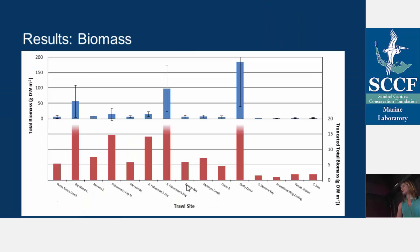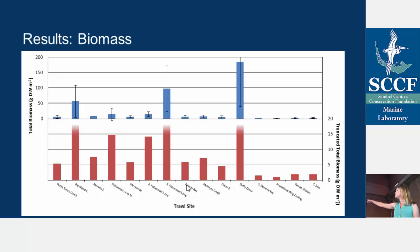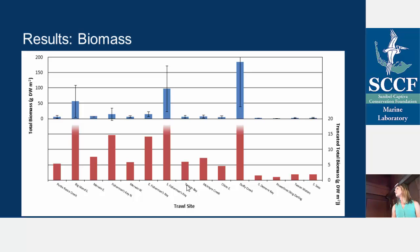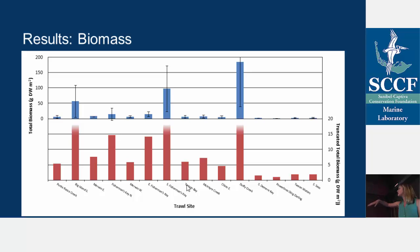Moving into the results. This graph is divided in two: along the x-axis are all of our sites, with those closest to the river mouth on the left and the furthest away on the right. So Tween Waters and South Seas are up in Pine Island Sound, while Punterasa Creek, Big Island, and Merwin are near the river mouth. What we expected to see was high biomass near the river trailing off toward Pine Island Sound. You can see that Pine Island Sound has lower biomass, but the pattern isn't really as clear as we were expecting. The top half shows the raw numbers and the bottom half is truncated so you can see the more minor patterns more clearly.